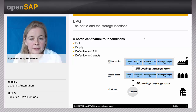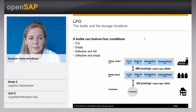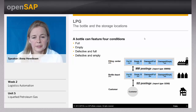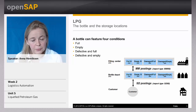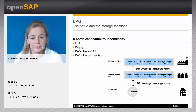A bottle of LPG can feature four conditions: it can be full, it can be empty, it can be defective empty, or defective full. If a delivery goes to the customer and something isn't working right, the customer will say they're not going to touch it and will give it back to be checked. So we have each plant set up with four different storage locations — full, empty, damaged full, damaged empty. We don't change the material number; based on the storage location, we know the condition of the bottle.